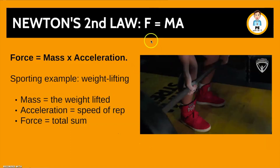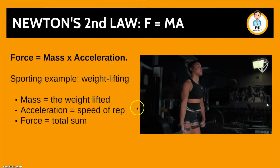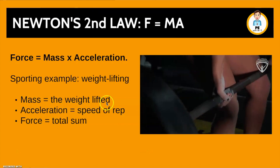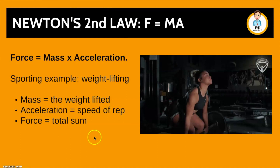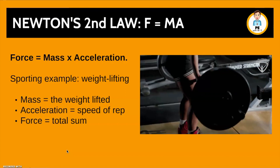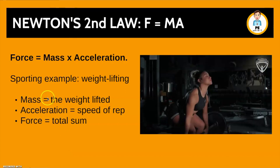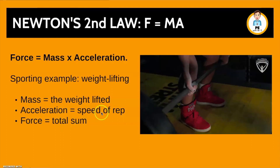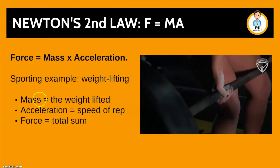Newton's second law is force equals mass times acceleration. Using weightlifting as our sporting example: mass is the weight that is lifted, acceleration is the speed of the repetition, and force is the total sum of one times the other. This is useful if you want to improve your performance in the gym — you can try to increase your weight, which will increase your overall force; increase the speed of your repetitions, which will also increase the force; or you can try to do both.